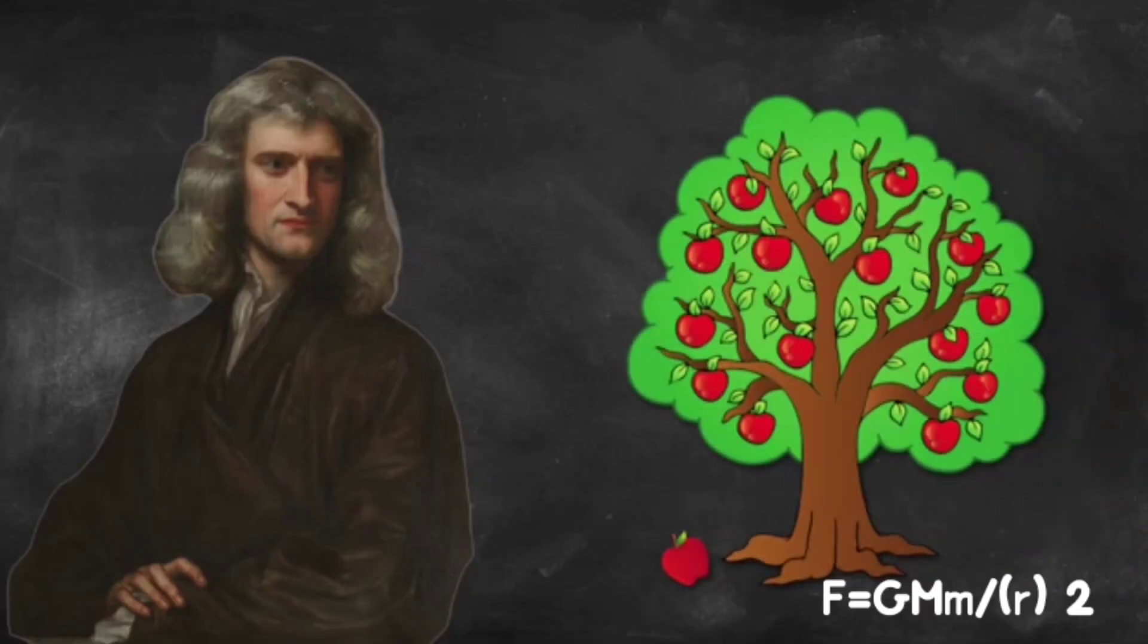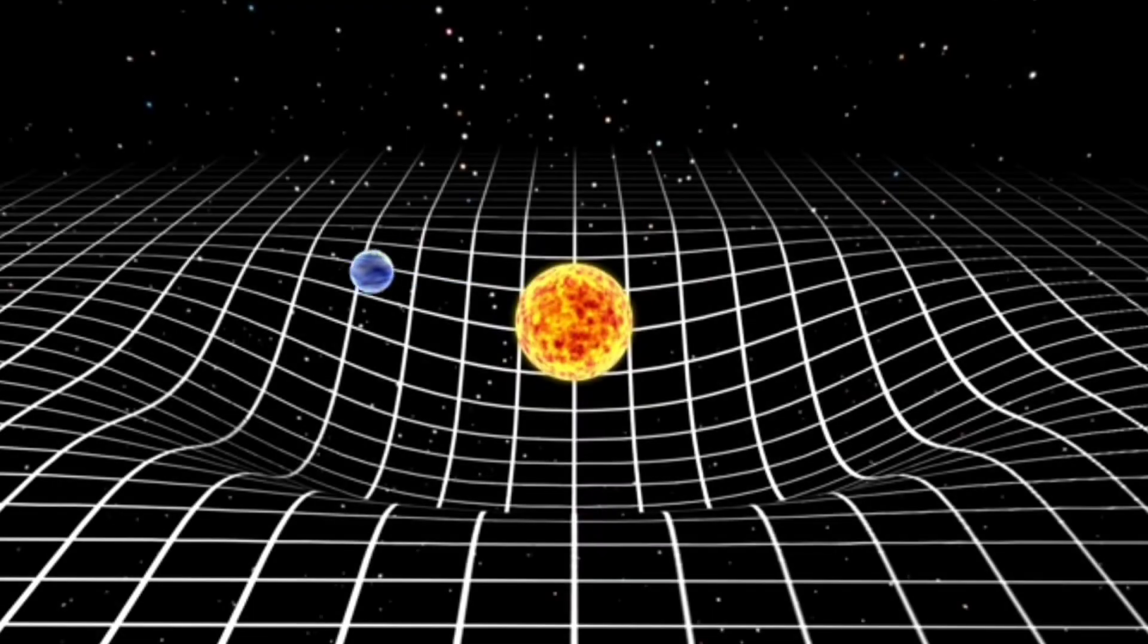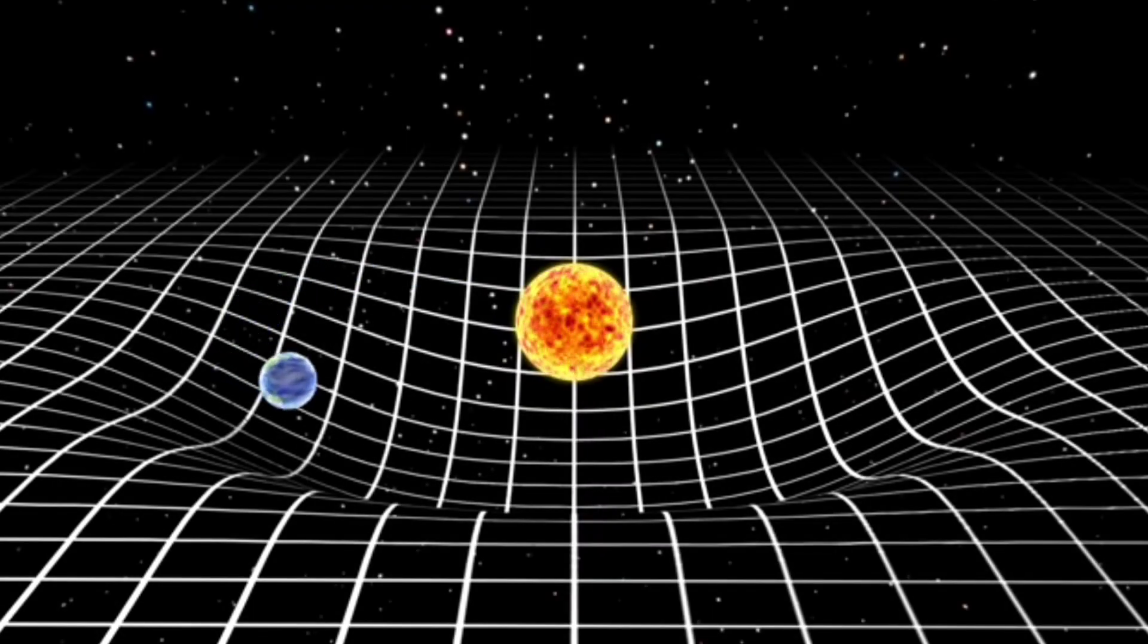Like Newton said, F equals GMm by R squared. Newton not explained how gravitational force actually works. Then what is gravity?